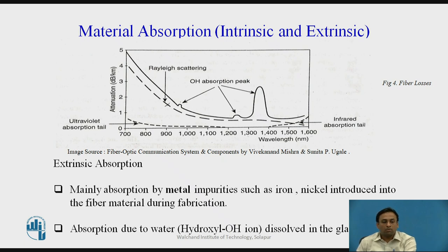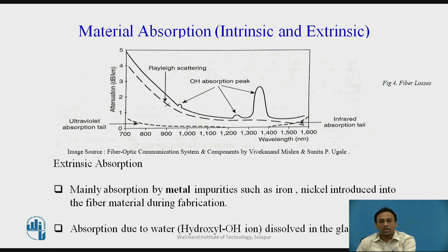The amount of water impurities present in the fiber must be less than a few parts per billion. The fiber attenuation caused by extrinsic absorption is affected by the level of O-H bond impurities present in the fiber. If the amount of impurities in the fiber is reduced, then the fiber attenuation is also reduced.